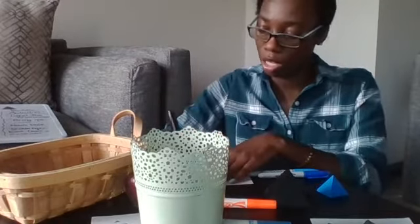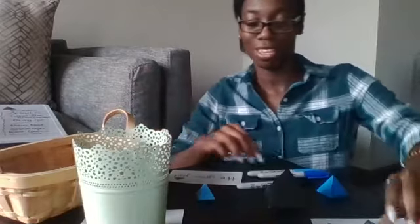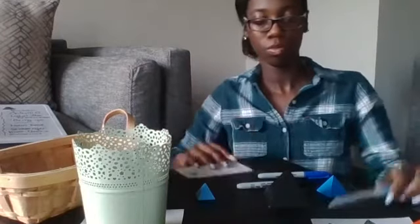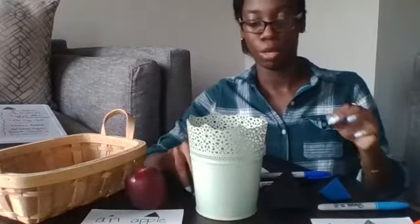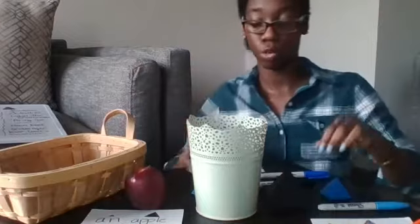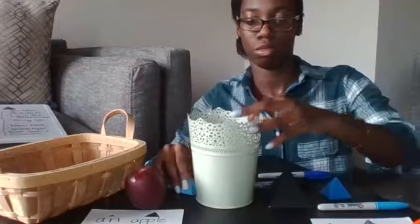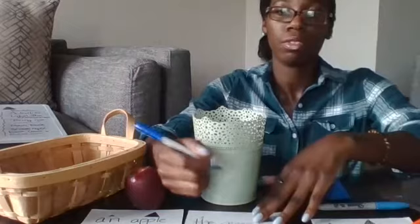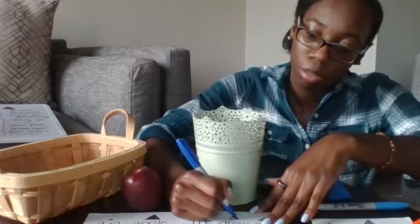'Pale' is the noun because it's a thing. 'The' is the article because 'a', 'an', and 'the' are articles, and that's the little triangle. But now I added a word—'green'. So green would be the adjective because I am describing the pale.